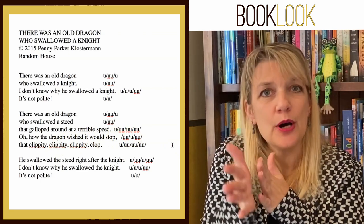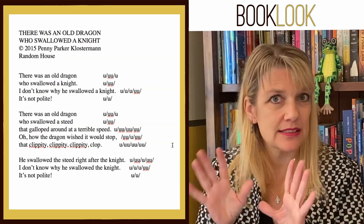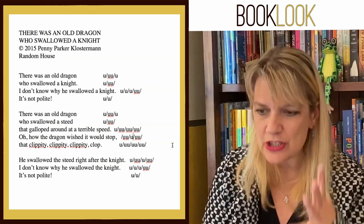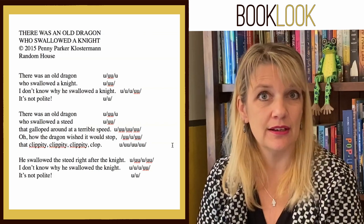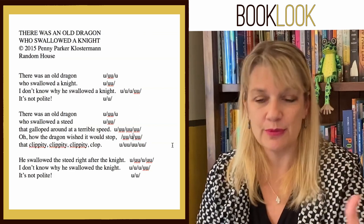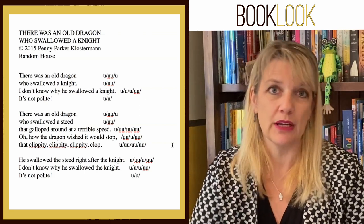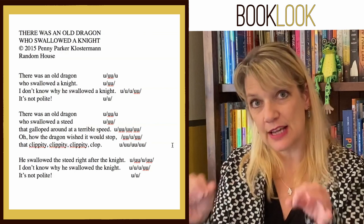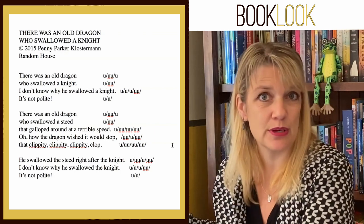'Oh, how the dragon wished it would stop' — this makes me put more emphasis on 'wished,' giving even more weight to how desperately the dragon wants this thing to stop, because the steed is going around clippity clippity clippity clop in his stomach throughout the entire rest of the book. And it's really cute, because 'clippity clippity clippity clop' itself becomes a little refrain that we see now and then, not attached to the rest of the stanzas.